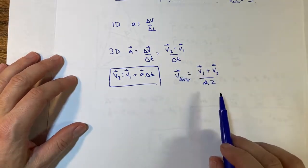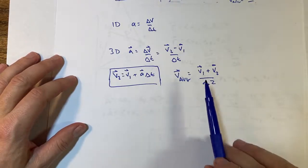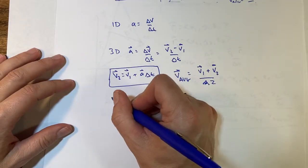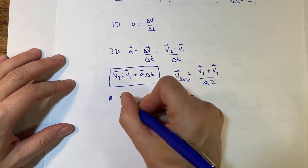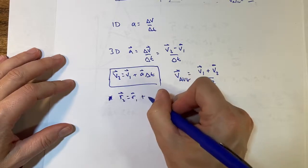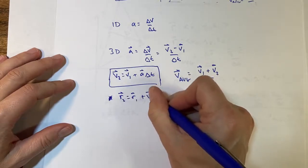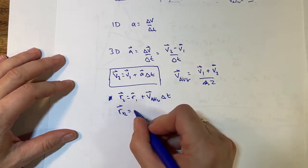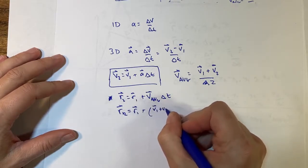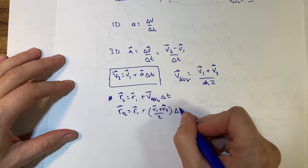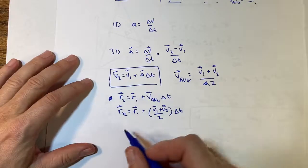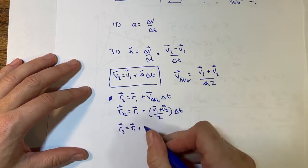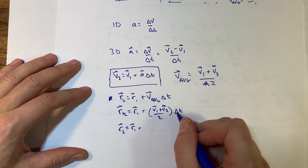I can also use this: the average velocity is (v1 + v2)/2 when acceleration is constant. Using that along with the position update definition: r2 equals r1 plus v_average·delta t. Substituting in for v_average: r2 equals r1 plus (v1 + v2)/2 times delta t.